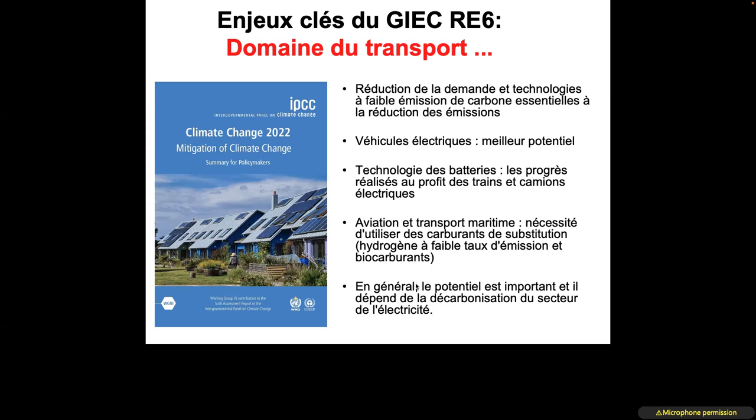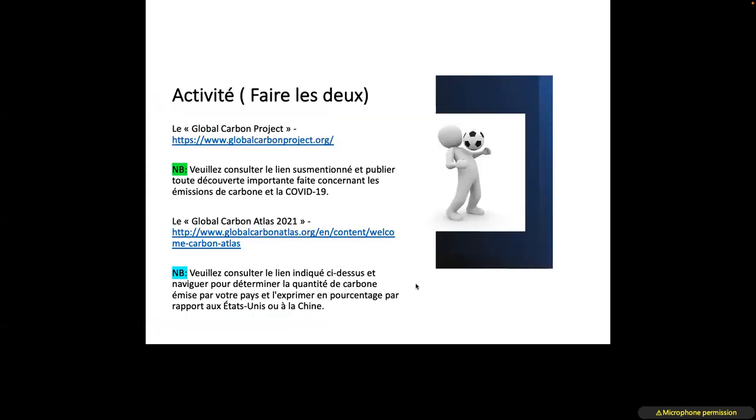Countries need not only to commit but practically move toward implementation of these engagements, so that by 2030 the necessary reduction objectives are achieved, and greenhouse gases can be balanced in the atmosphere, limiting warming to 1.5°C or 2°C. Relevant links are provided for further reading and to better understand what we will discuss.